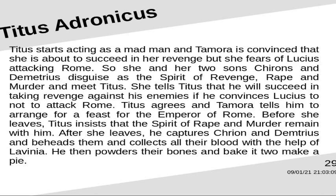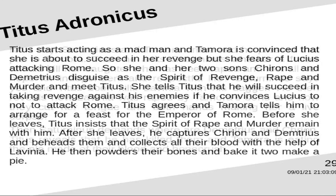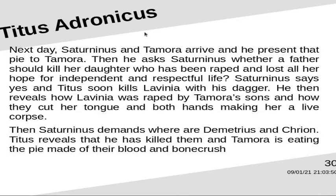He then powders their bones and makes a pie. The next day, Saturninus and Tamora arrive and Titus presents that pie to Tamora. He then asks Saturninus whether a father should kill his daughter who has been raped and lost all hope for an independent and respectful life. Saturninus says yes, and Titus kills Lavinia with his dagger. He then reveals how Lavinia was raped by Tamora's sons and how they cut her tongue and both hands. Saturninus demands to know where Demetrius and Chiron are. Titus reveals he has killed them and that Tamora is eating the pie made of their blood and bone crush.